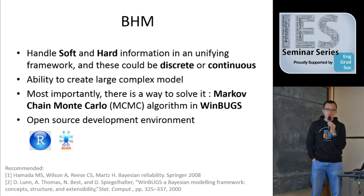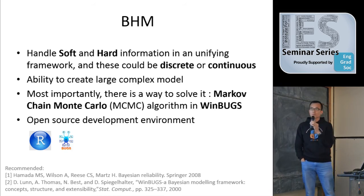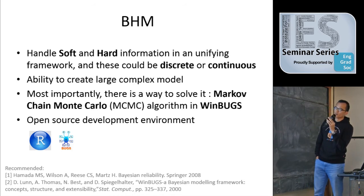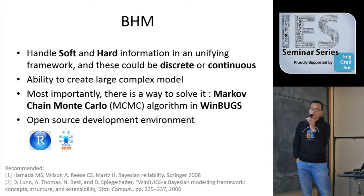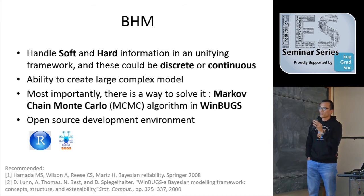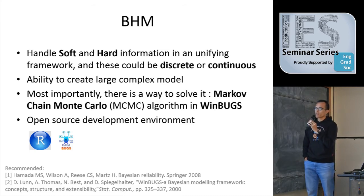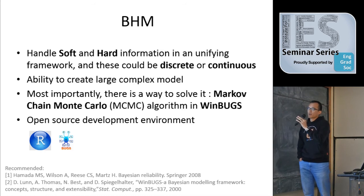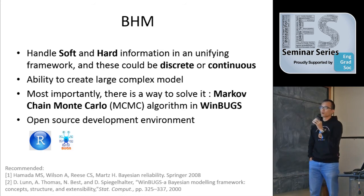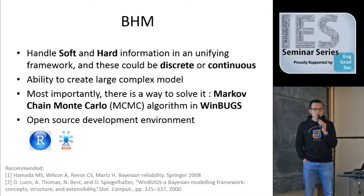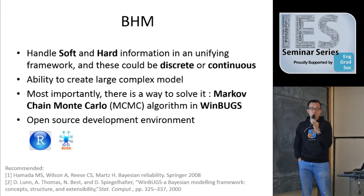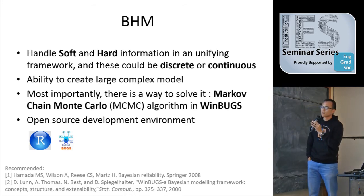The third reason — and I think it's the most important — is that you can create a very complex model, but you need to be able to solve it. Brilliant statisticians already developed a way to solve it, and the software that helps you create the model is called WinBUGS. The method is called Markov Chain Monte Carlo. It's basically a Monte Carlo process — a sampling process — with a Markov chain mechanism behind it. I implement the model using two main open-source software tools: R and WinBUGS.